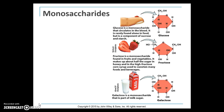Simple carbohydrates are the mono- and disaccharides. Glucose, fructose, and galactose are the monosaccharides — they have the same formula but their atoms are arranged differently, as you can see in the diagram. Glucose is the monosaccharide that circulates in the blood and is rarely found alone in food. Carbohydrates' main function is to provide energy for the body.